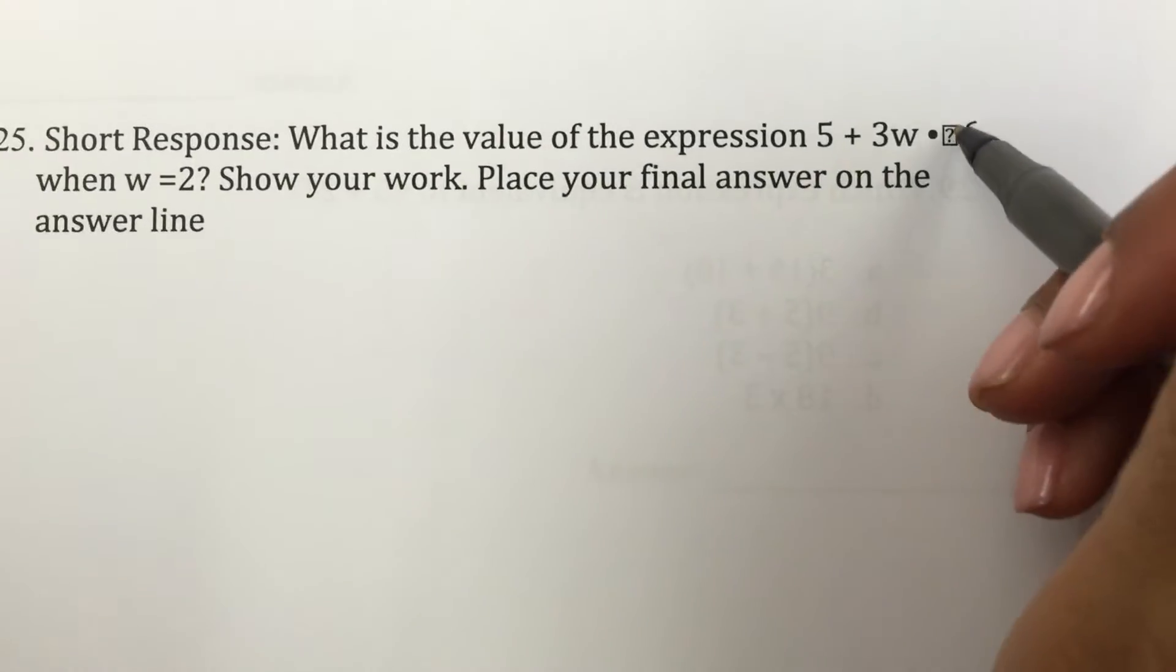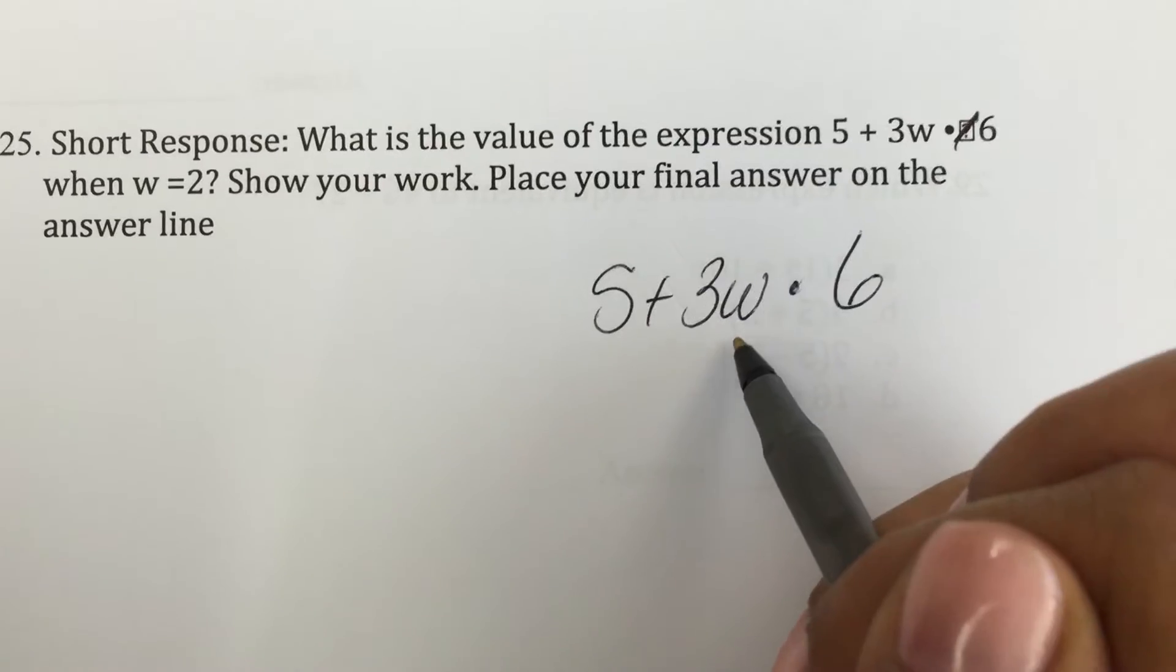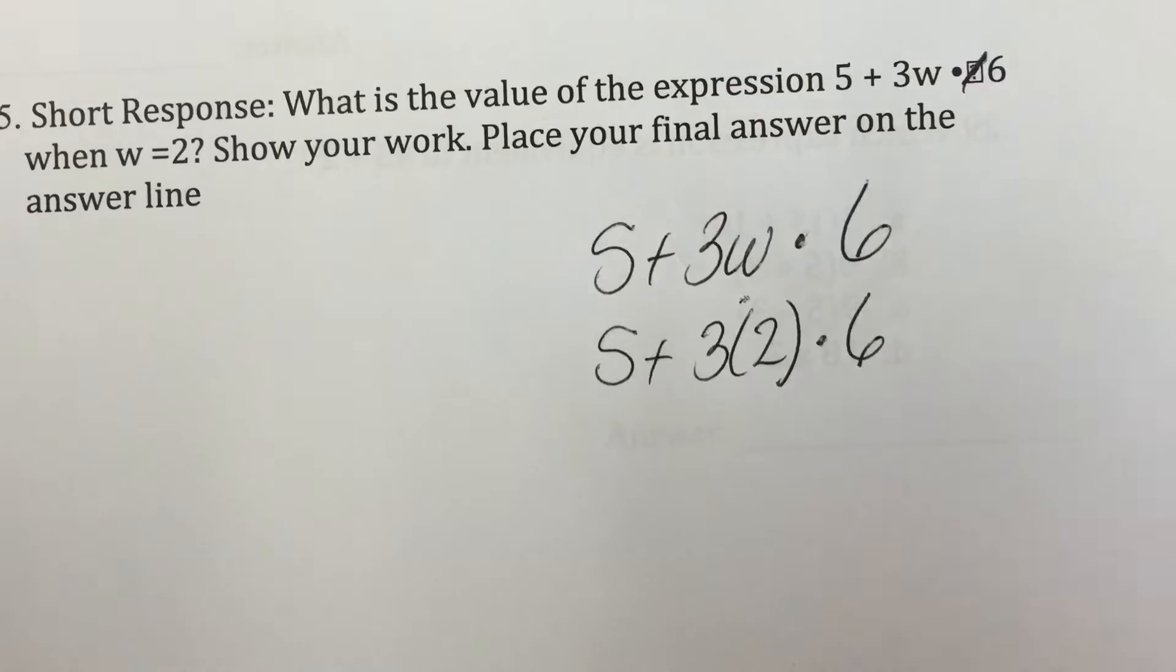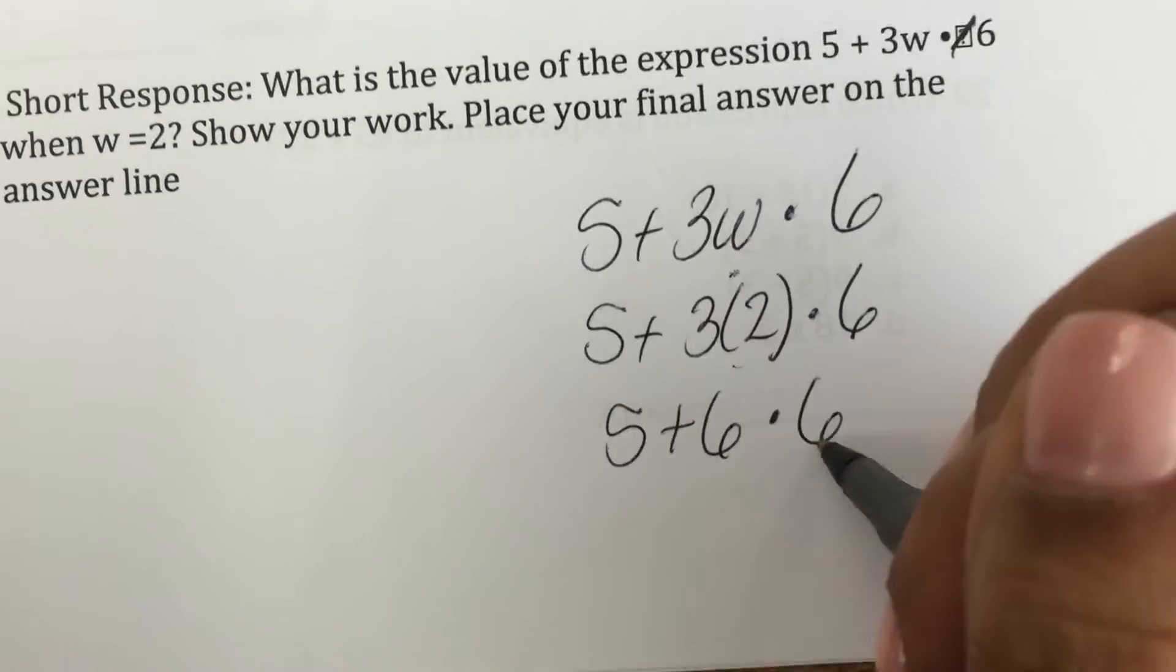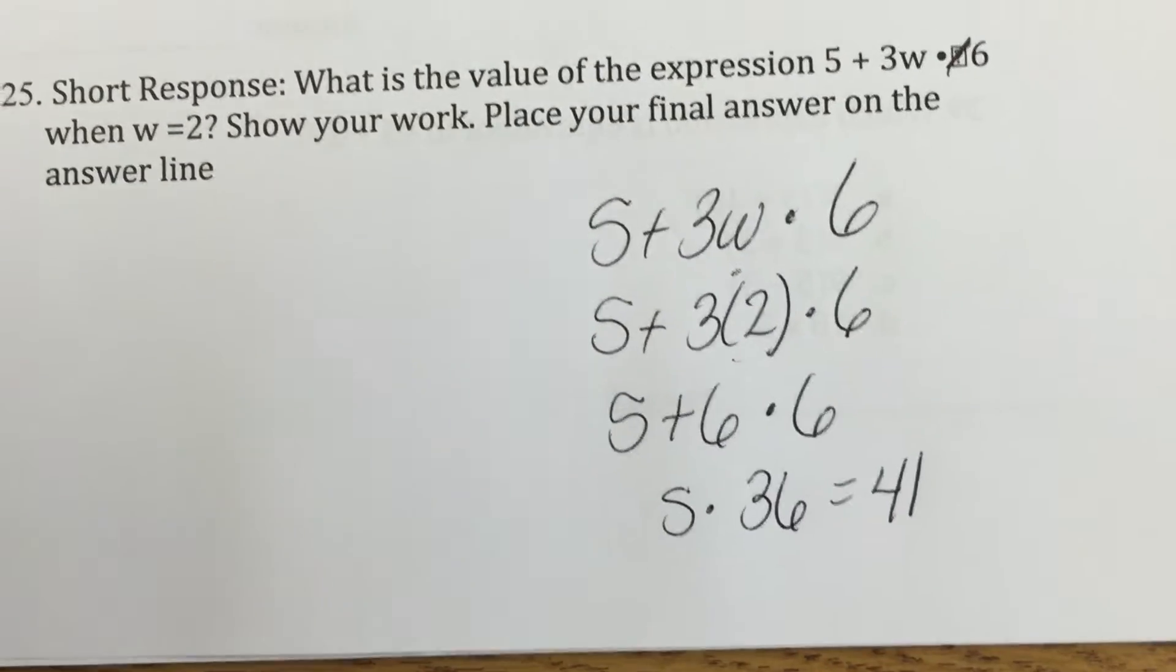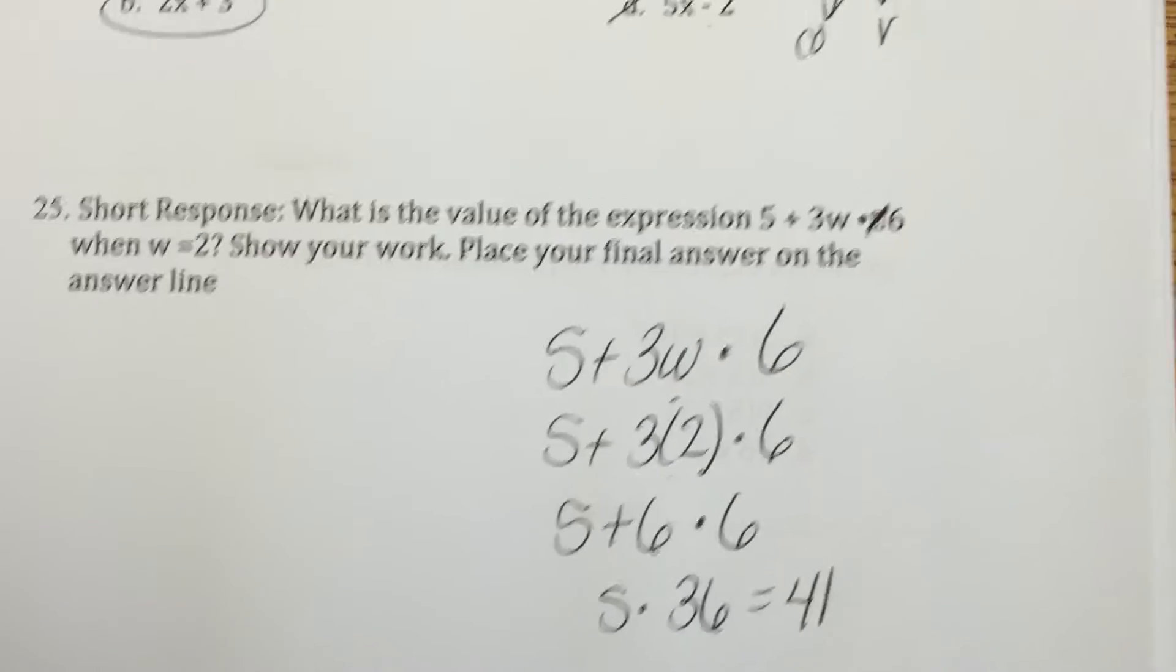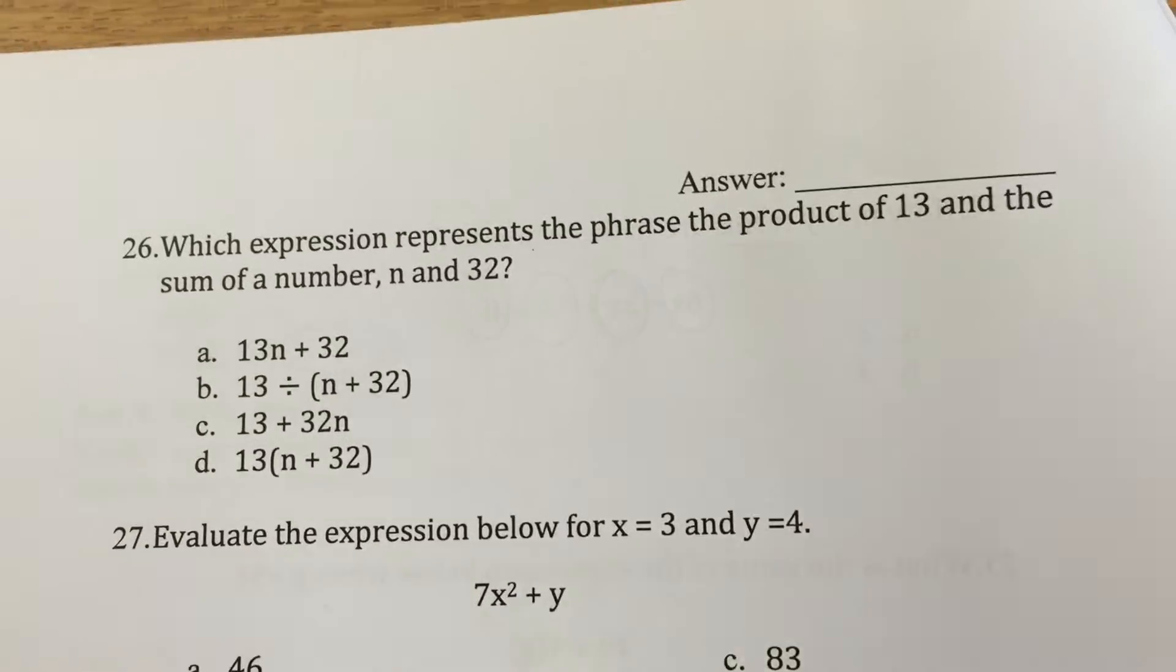I don't know why this made this little mark here, but I have 5 plus 3w times 6 when my w is equal to 2. So 5 plus 3 times 2 times 6. I'm going to multiply from left to right. 5 plus 6 times 6. 5 plus 36. 41. So my answer should be just 41. We're moving along pretty well. Sorry for the shaky hand work. I've done videos on my iPhone. But I hope you guys are figuring out what you're doing well and what you need help with. Okay.